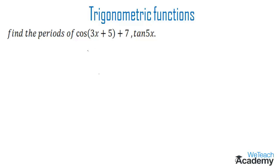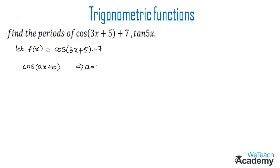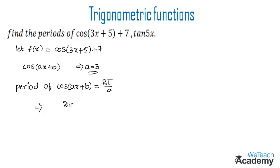Let us consider the first function: f(x) = cos(3x+5)+7. In order to find the period, we compare this with the form cos(ax+b). By comparing, we get a = 3. The formula to find the period of cos(ax+b) is 2π/|a|. Substituting the value of a, we get 2π/|3|.